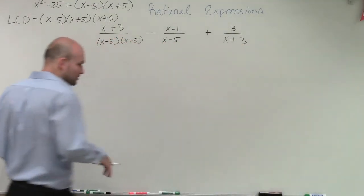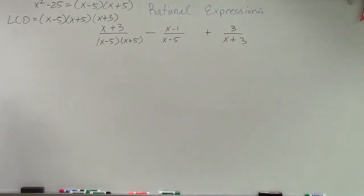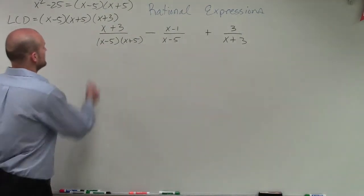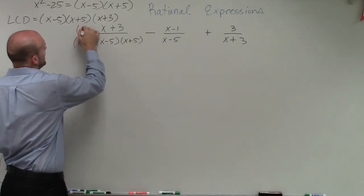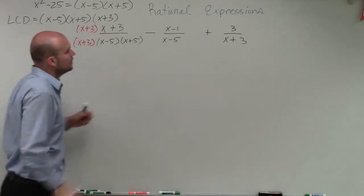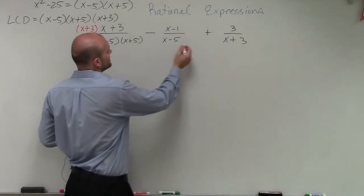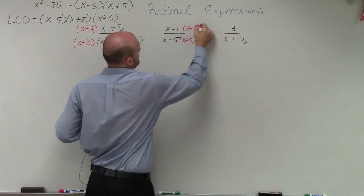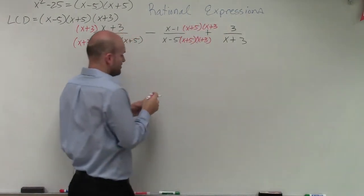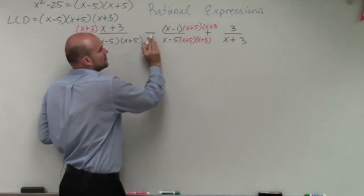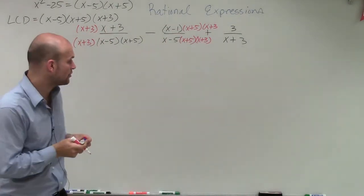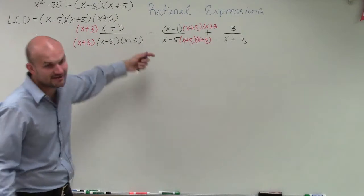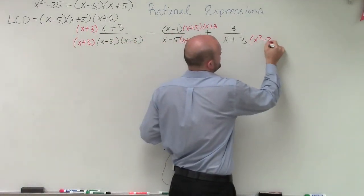So I need to multiply by the terms that give me that denominator. On the left side, I already have x minus 5 and x plus 5, so I need to multiply by x plus 3 on the top and bottom. Over here, I only have x minus 5, so I need to multiply by x plus 5 and x plus 3 — and note it's being multiplied by a negative, which is very important. Over here, I have x plus 5, so I need to multiply by x minus 5 and x plus 5, which we can write using our difference of two squares.